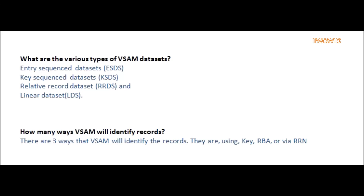Question: What are the various types of VSAM datasets? Answer: Different VSAM datasets available in mainframes are Entry Sequenced Datasets, Key Sequenced Datasets, Relative Record Dataset, and Linear Dataset.